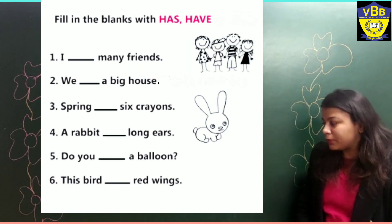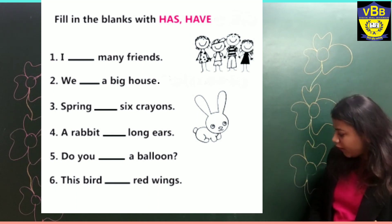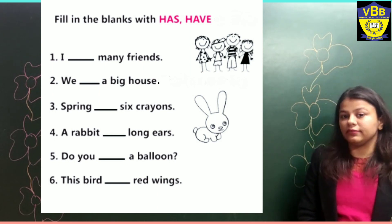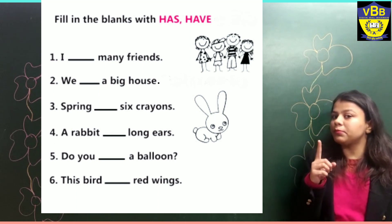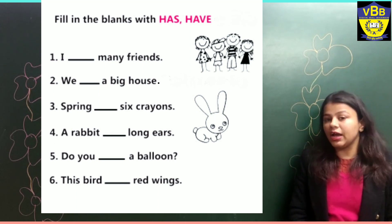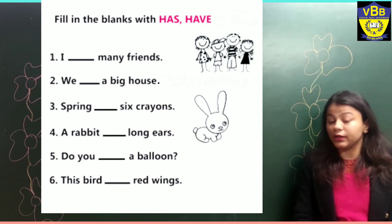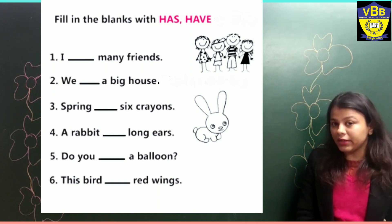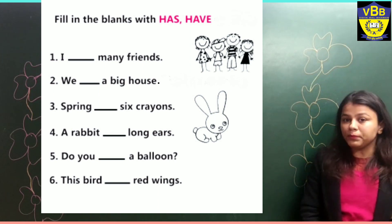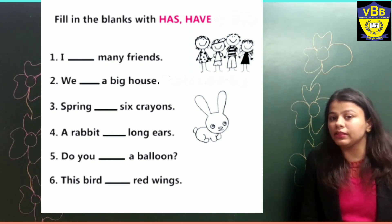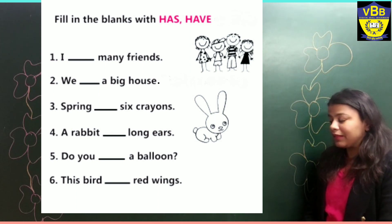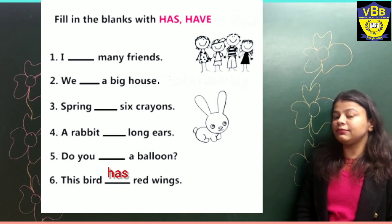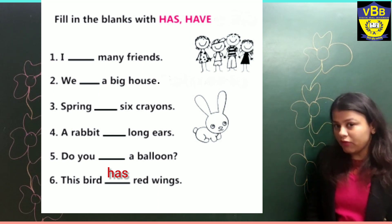This bird dash red wings. Here we are talking about only one bird. When we are talking about only one person, one animal, or one thing, then what will we use? Yes, we will use has. Our correct answer is: This bird has red wings.